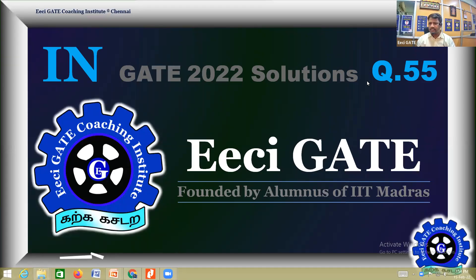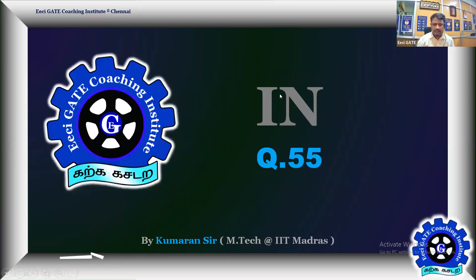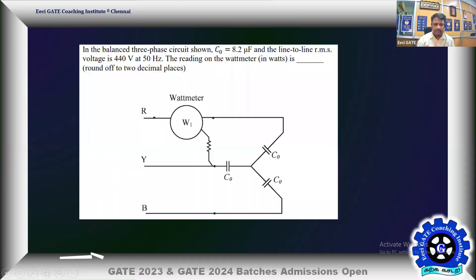Welcome back to Easy GATE, Gate 22 Instrumentation Paper Solutions. The next problem is also at the same level but very easy — problem number 55 — based on electrical measurements using an electrodynamometer type wattmeter.